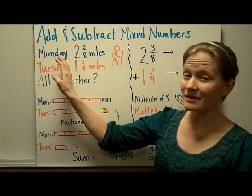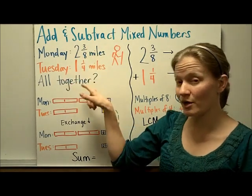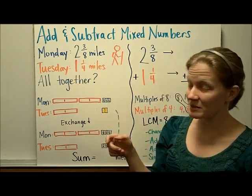So on Monday, let's pretend that you hiked 2 3/8 miles, and on Tuesday you hiked 1 1/4 miles, and you wanted to know how much that was altogether. So you're going to be adding two mixed numbers.